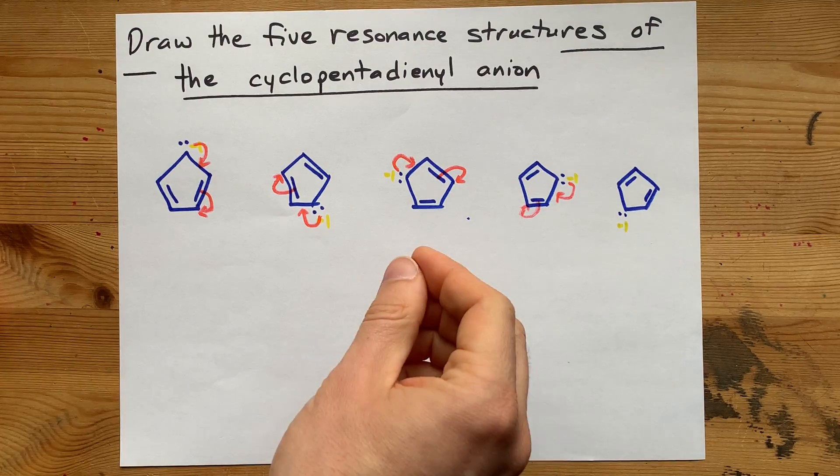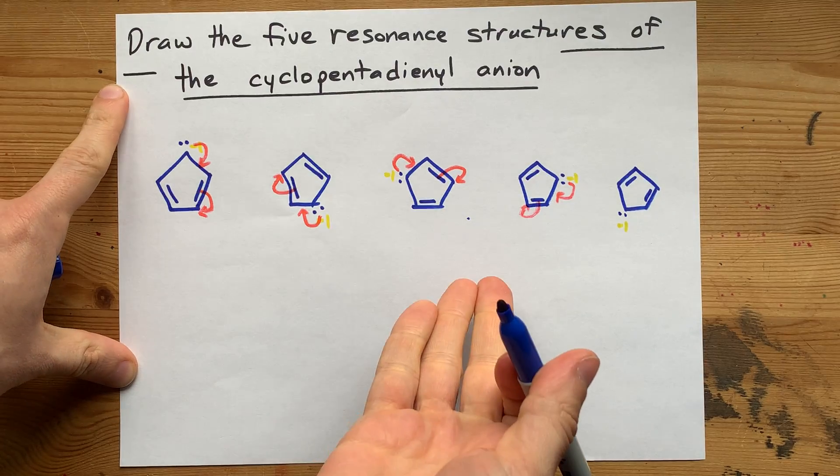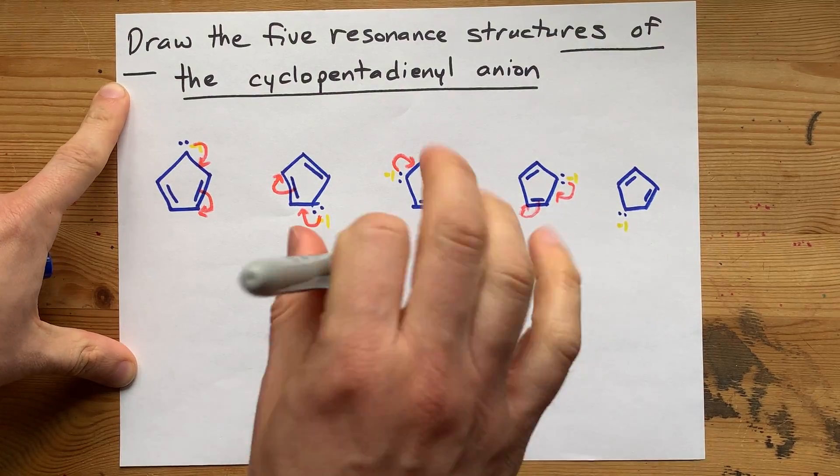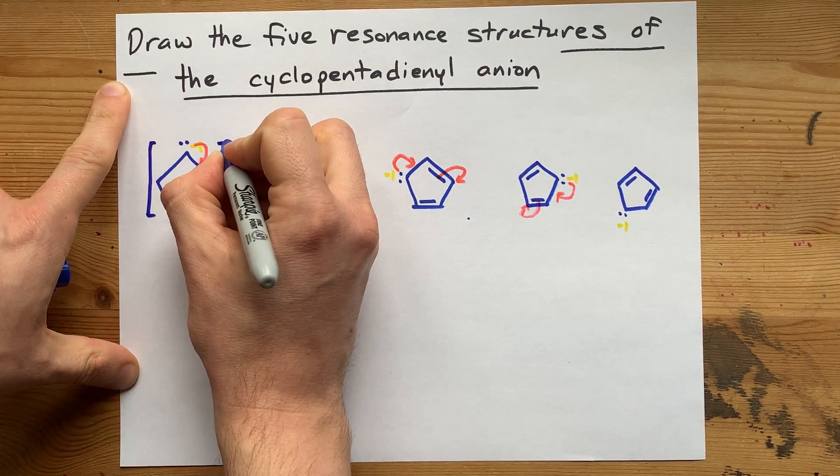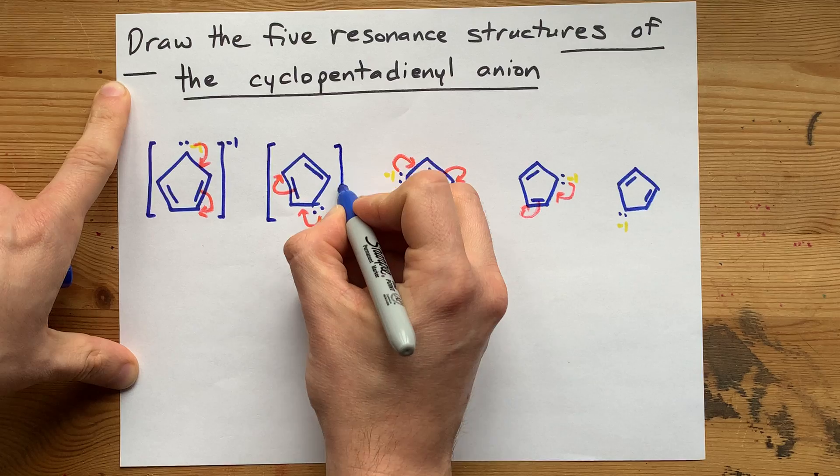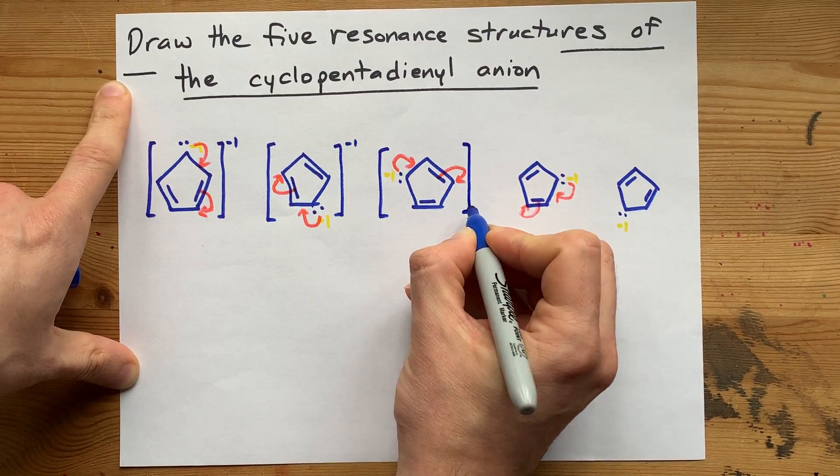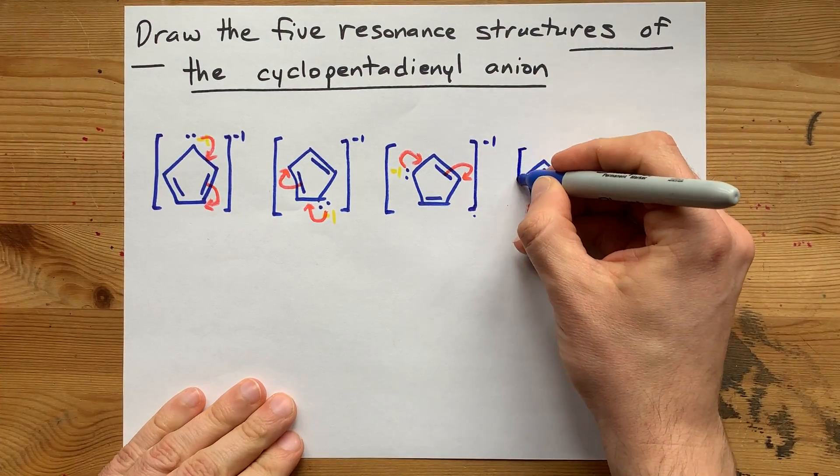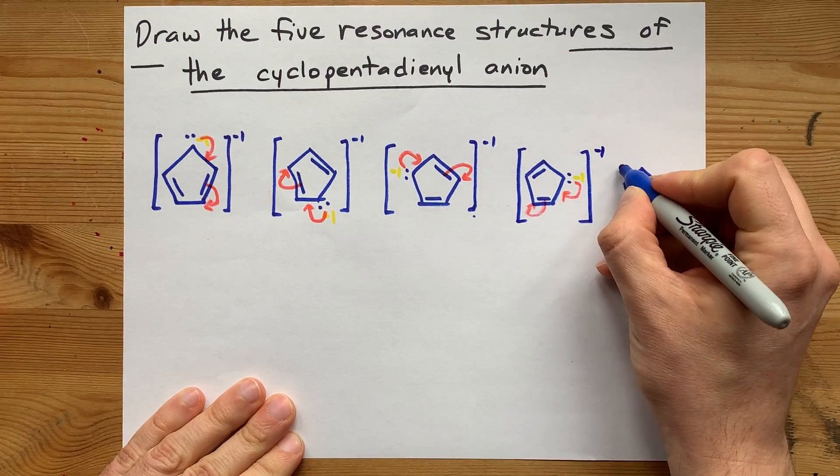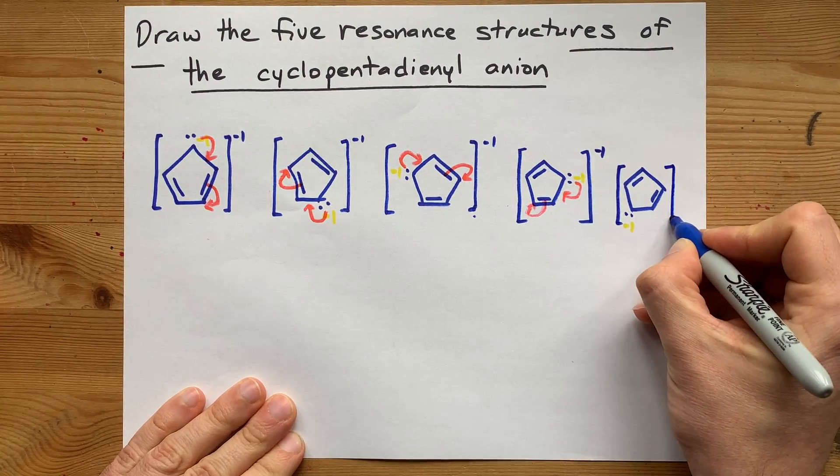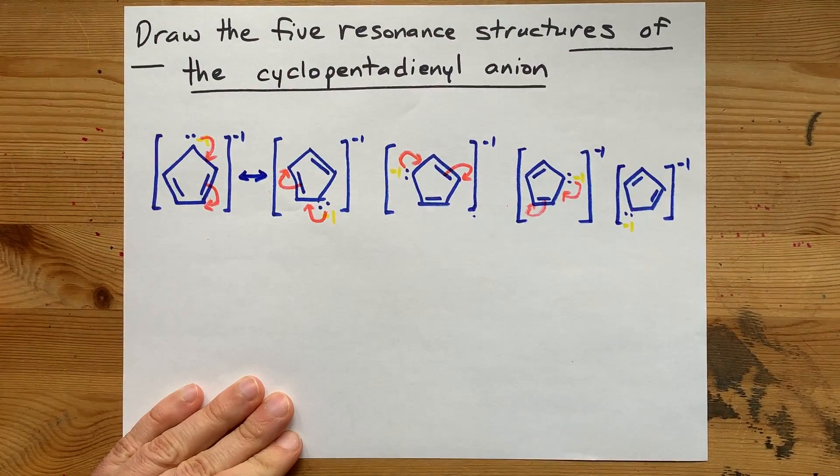Now, officially, the way that you're supposed to draw Lewis structures for each of these... Now, I guess this isn't a Lewis structure, so perhaps you don't have to do this, but some teachers are going to want you to put it in square brackets with a minus one charge to show that it is a minus one ion in each case. I guess I imagine there are teachers who would let you just put the whole thing in a single set of square brackets. Find out from your teacher what they want to see. And you need these resonance arrows.